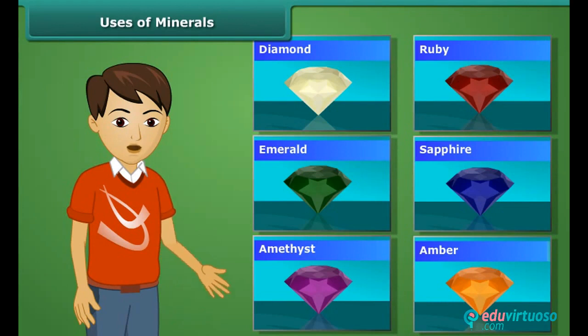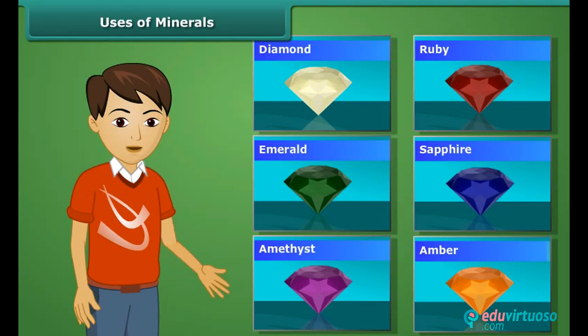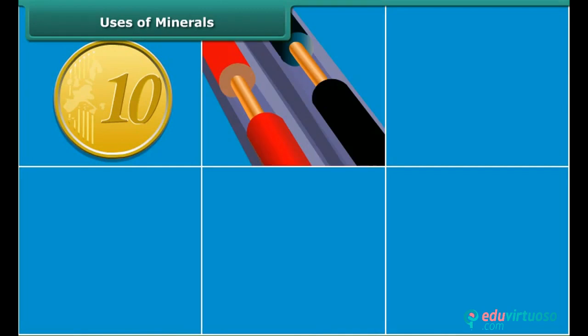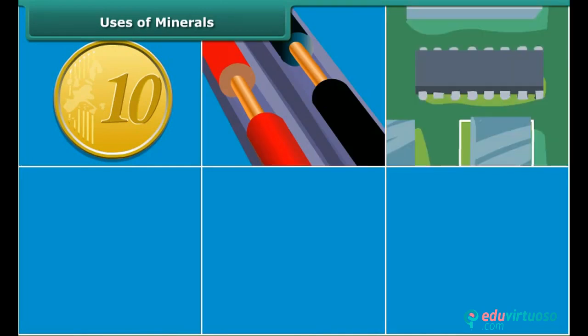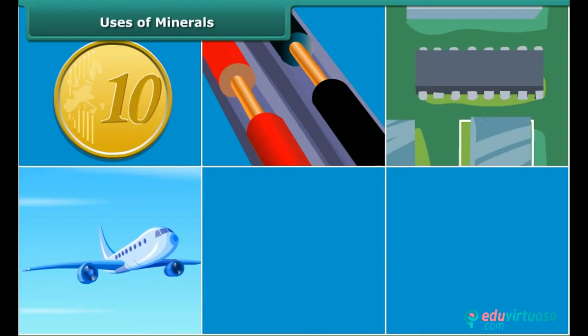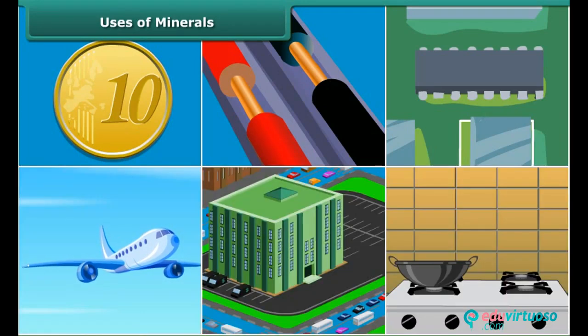Gems are made of minerals which make them hard. Copper coins and wires, silicon chips in computers, and aluminium used in automobiles, airplanes, buildings, and kitchenware tell us that minerals are widely used everywhere.